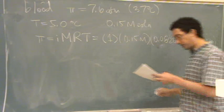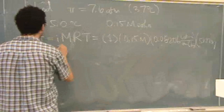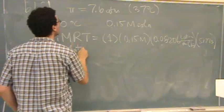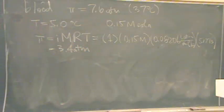And that should be 3.4 atmospheres. So you can see it's significantly lower at the transport temperature of 5°C.